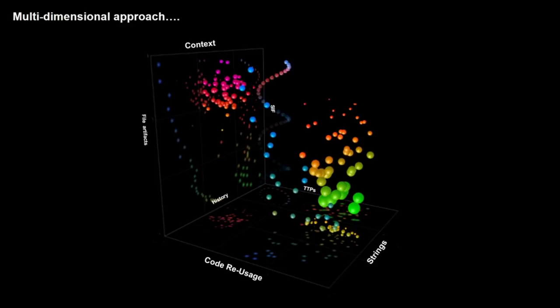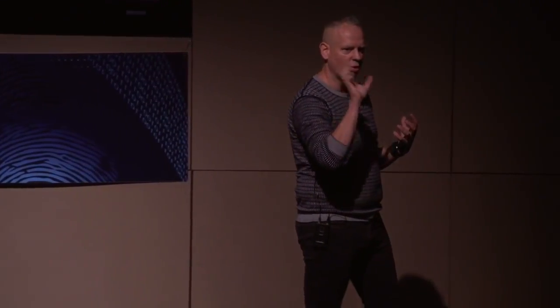When looking at nation state attacks, people tend to see only the IOCs or TTPs — a kind of flat diagram. But I like to use a multi-dimensional approach: TTPs, strings, file artifacts, code reuse analysis, and also history. Is there any history or context? The major keyword for my research is: what is the context? Where does this malware fit in?